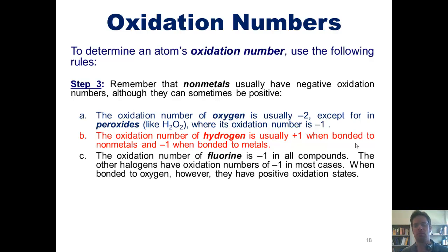The oxidation number of fluorine is always -1, except, of course, when you're talking about fluorine bonded to itself as F2 fluorine gas, in which case its oxidation number is zero, as delineated in the previous slide. Now, the other halogens have oxidation numbers of -1 in most cases. When bonded to oxygen, however, they have positive oxidation states.